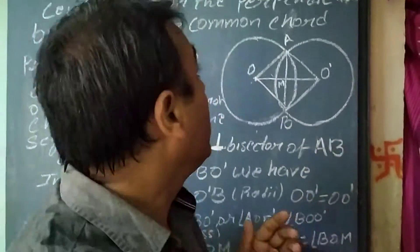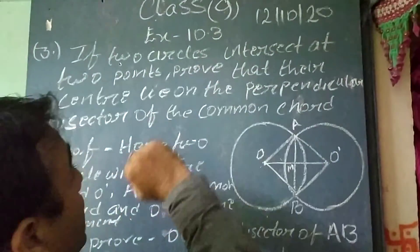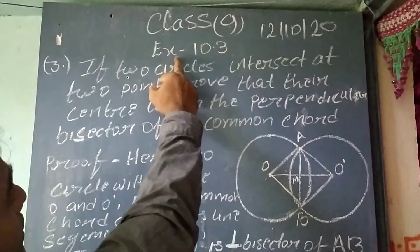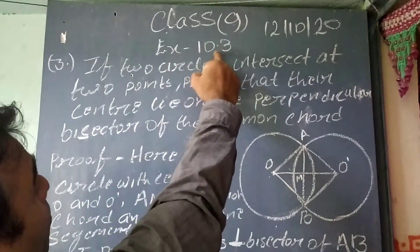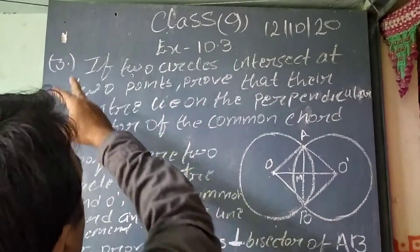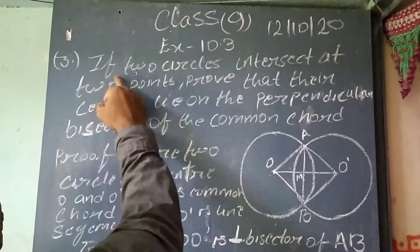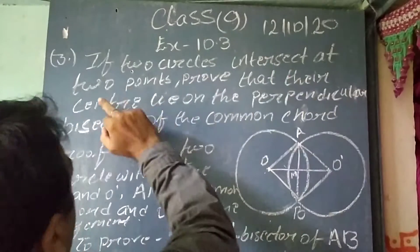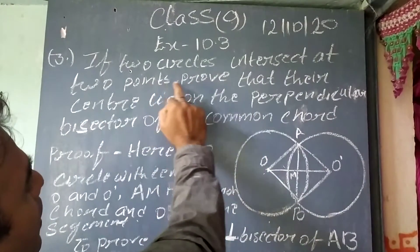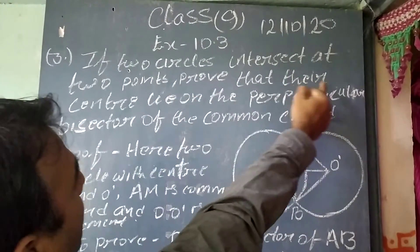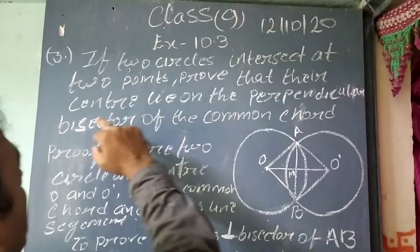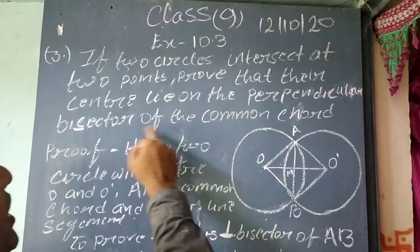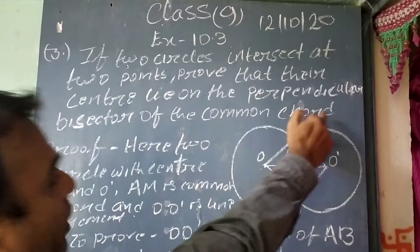Good morning. Today in class 9th, we are going to solve exercise 10.3, question number 3. If two circles intersect at two points, prove that their centers lie on the perpendicular bisector of the common chord.